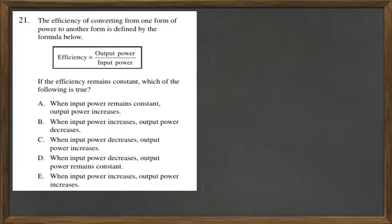Efficiency of converting from one form of power to another form is defined by the formula below. Efficiency equals output power over input power. Let's go ahead and put some numbers to this.